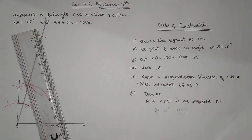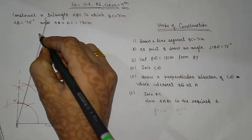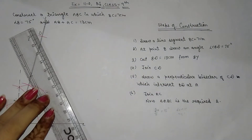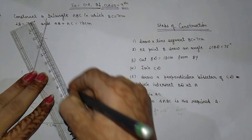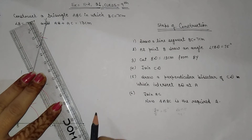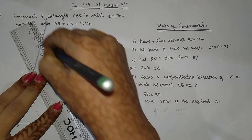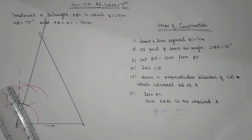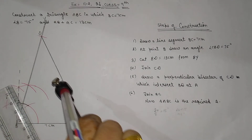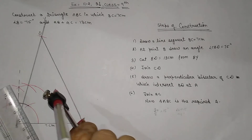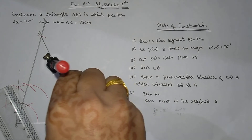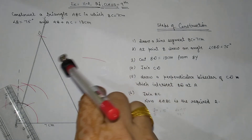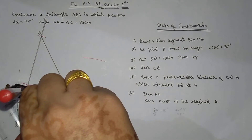Then you will join the points. We join here. Now the DC perpendicular bisector is constructed. When we draw the perpendicular bisector, whatever side should be equidistant — we join here.